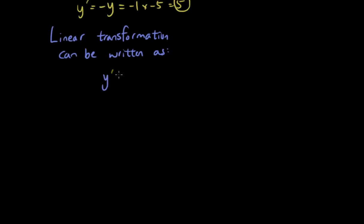y' = ax + by, actually let's start with x'. x' = ax + by, and y' = ax, sorry, let's use another two variables, cx + dy. This is a summary of how you can transform any point using a linear transformation.